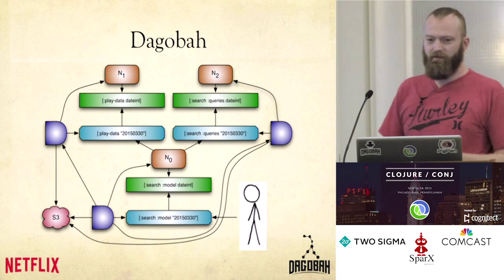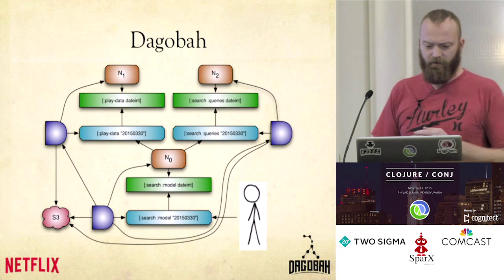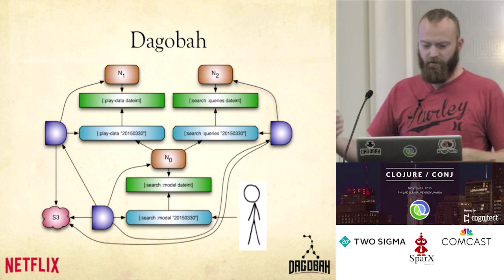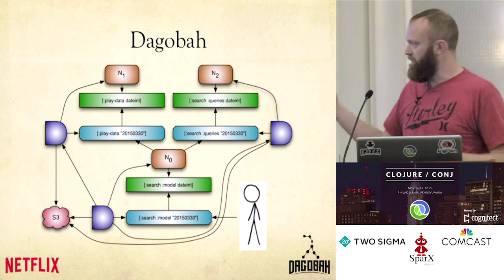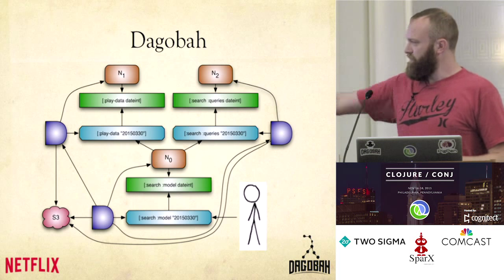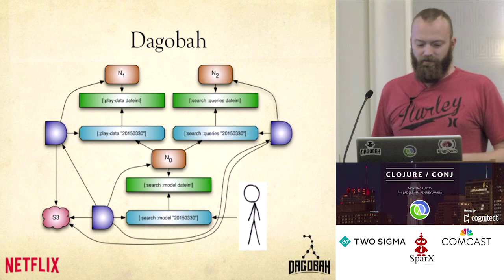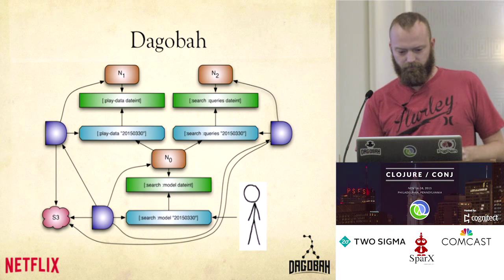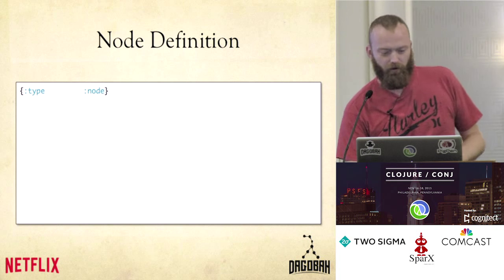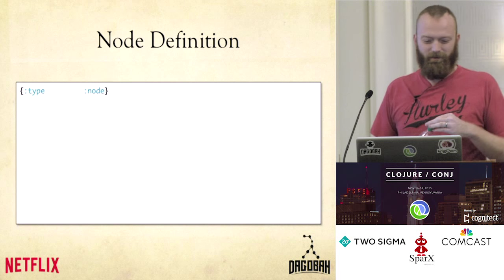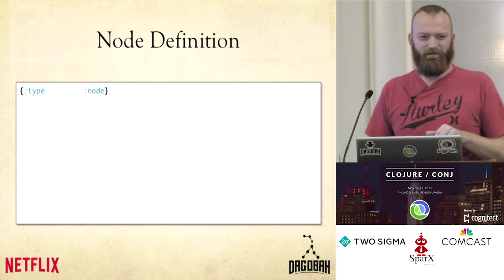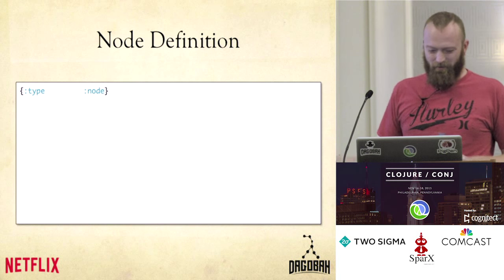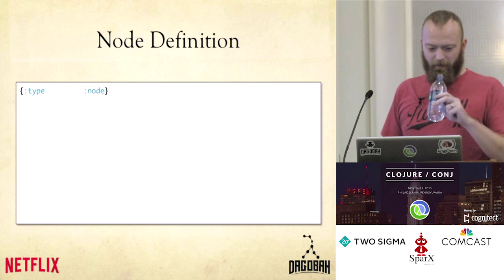That's kind of the overall model of Dagobah — it's a little bit different than a workflow because each individual step is kind of issuing a new request. So we have these node definitions and the addresses. We define them in EDN — this is Clojure, so why not? You have a map that defines what a node looks like.